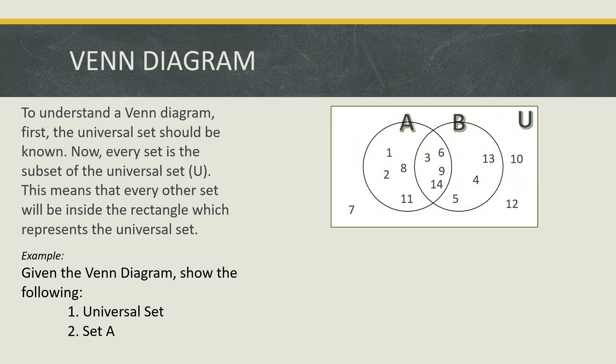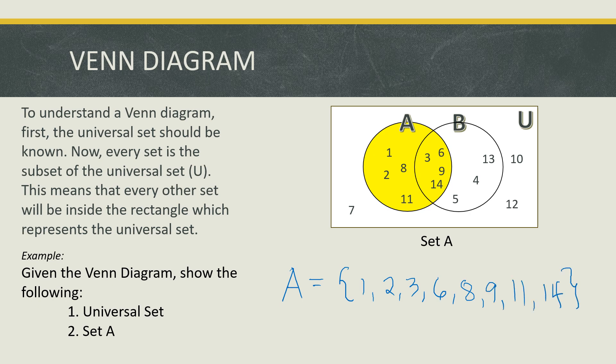How about set A? To show set A using the Venn Diagram, we need to get all of the elements inside circle A — we just need to shade circle A. Therefore, the elements of set A are 1, 2, 3, 6, 8, 9, 11, and 14. These are all the elements that belong to set A.